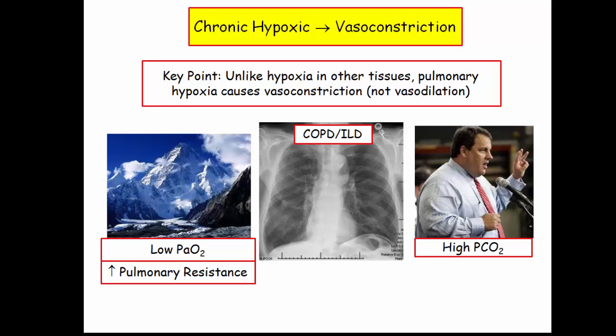Be prepared to see questions about pulmonary hypertension when discussing acclimatization to high altitude. They love to compare twin brothers — one living at sea level working at Starbucks in Seattle, the other living at high altitude in the Himalayas. The brother at elevation is hyperventilating, has developed respiratory alkalosis, but also has elevated pulmonary artery pressures secondary to hypoxic vasoconstriction. Acclimatization to altitude takes place through increased red blood cell mass, but the PaO2 remains low.